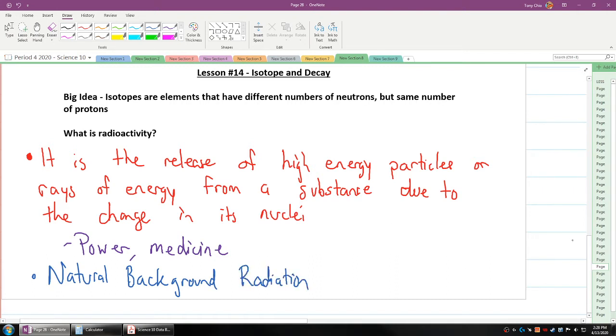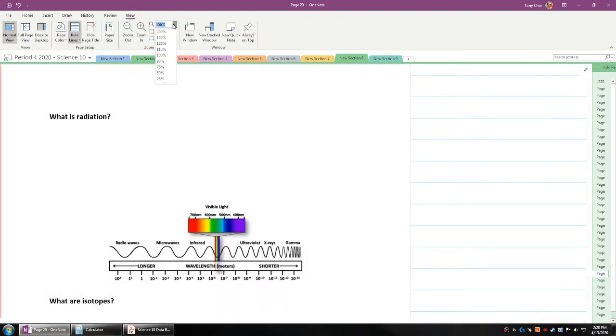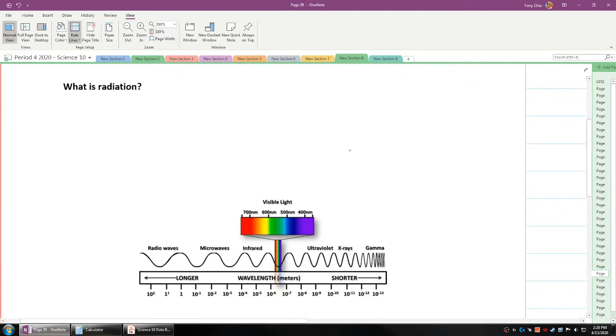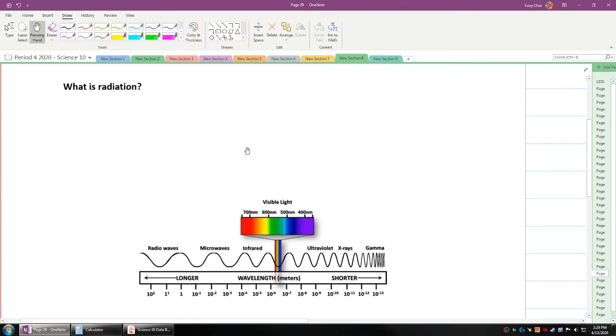So what is natural background radiation? Well, you might remember back in Science 8 or Science 9, you learn about visible light. Now visible light is just a tiny section of what we call the electromagnetic radiation. So what is radiation? Well, it's just high energy rays and particles emitted by a radioactive source.